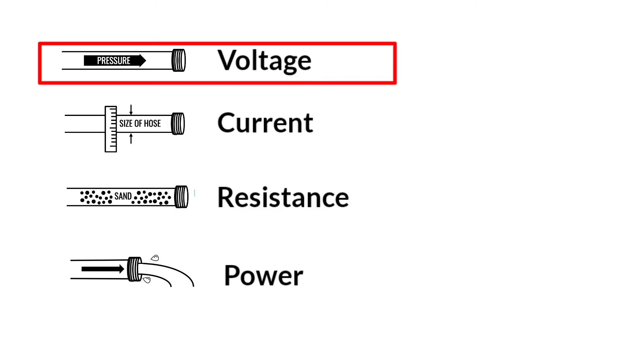Voltage is like the pressure that pushes water through the hose. It is measured in volts. Current is like the diameter of the hose. The wider it is, the more water will flow through. It is measured in amps.